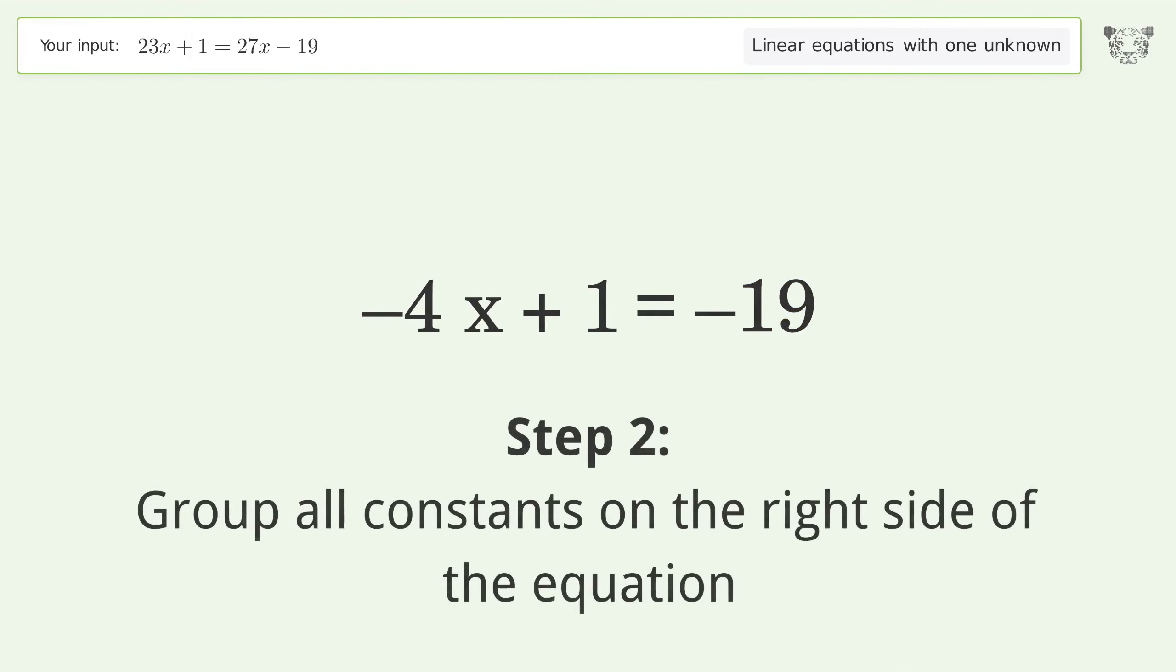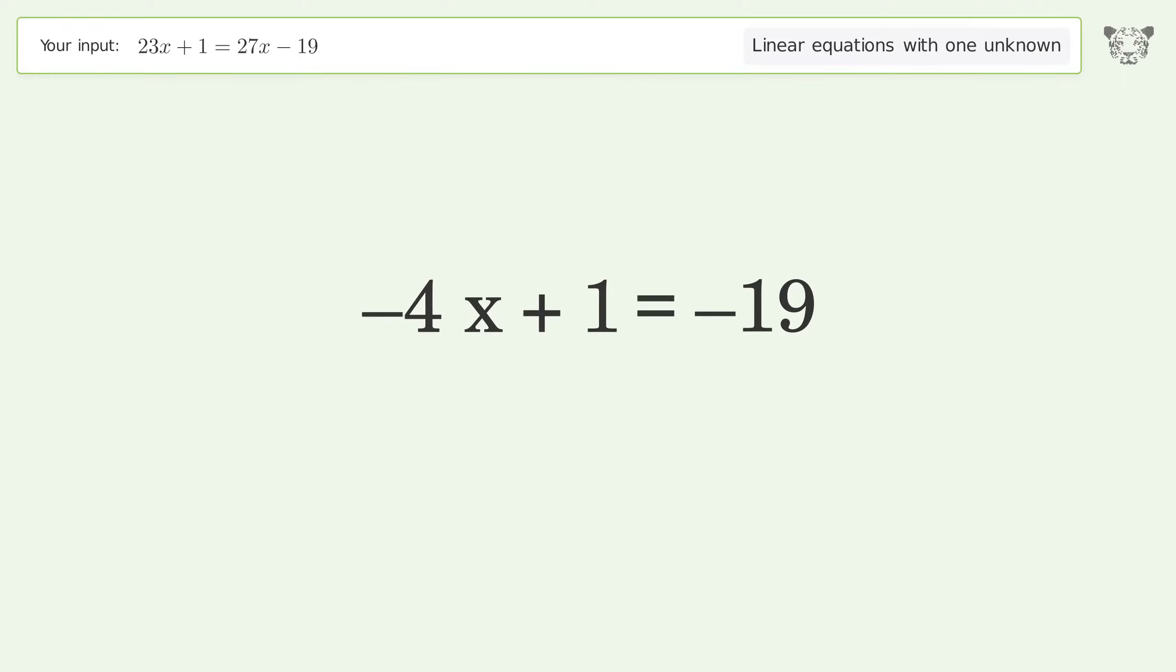Group all constants on the right side of the equation. Subtract 1 from both sides. Simplify the arithmetic.